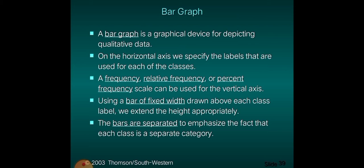A bar graph is a graphical device for depicting qualitative data. On the horizontal axis we specify the levels or labels for each of the classes. A frequency, relative frequency, or percent frequency scale can be used for the vertical axis. Using a bar of fixed width drawn above each class label, we extend the height appropriately, and the bars are separated to emphasize the fact that each class is a separate category.